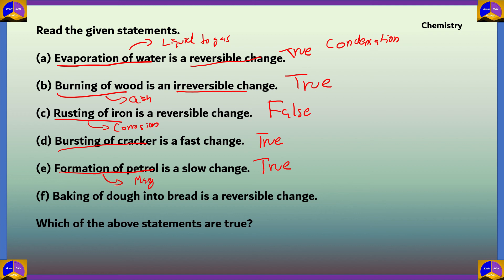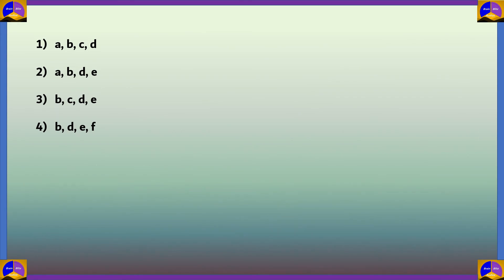Statement F says baking of dough into bread is a reversible change. When we bake dough into bread, yeast causes a chemical change, and chemical changes are irreversible. So baking dough into bread is irreversible, making statement F false. The true statements are A, B, D, and E, which corresponds to option 2 — the correct answer.